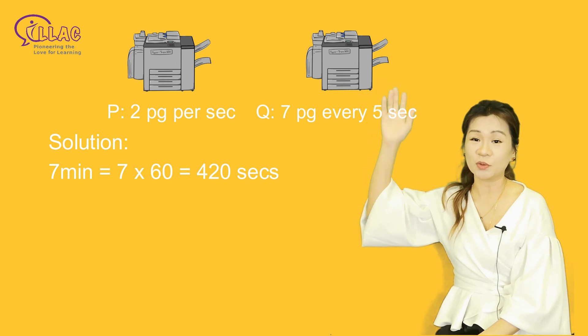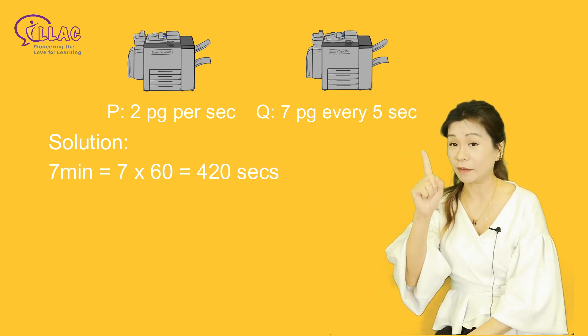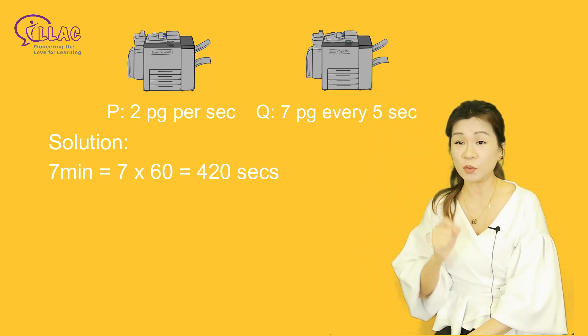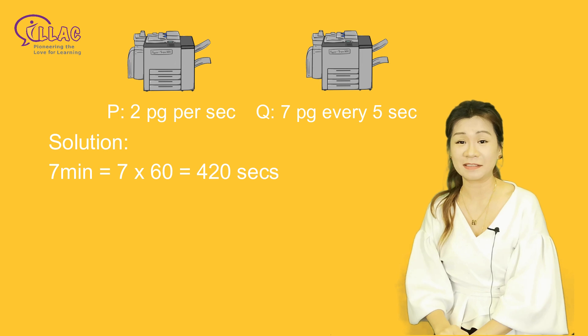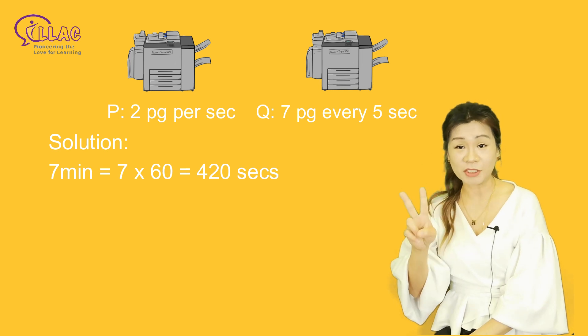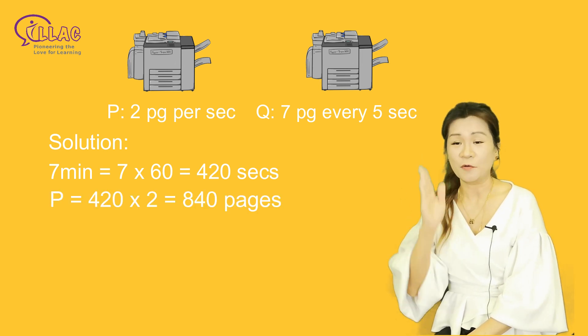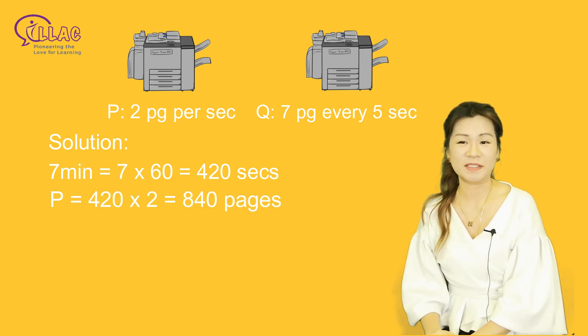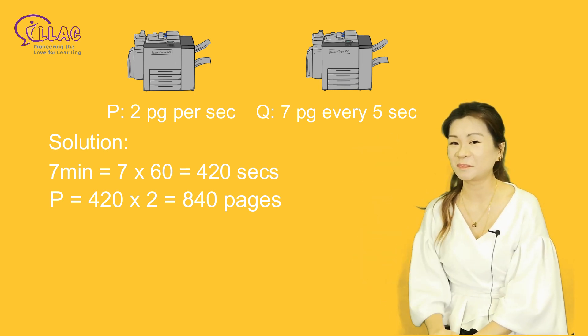Machine P took 7 minutes to print part 1, which is equal to 420 seconds. Because 2 pages can be printed per second, 420 seconds give us 840 pages.